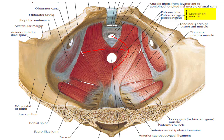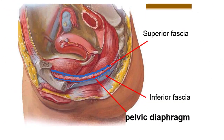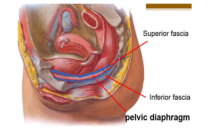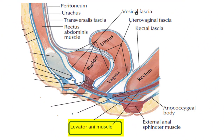The parietal pelvic fascia also covers the pelvic diaphragm, which is formed by the levator ani and coccygeus muscles. Here it forms two layers: the superior fascia of the pelvic diaphragm and the inferior fascia of the pelvic diaphragm, covering the top and bottom aspects of the pelvic diaphragm respectively.